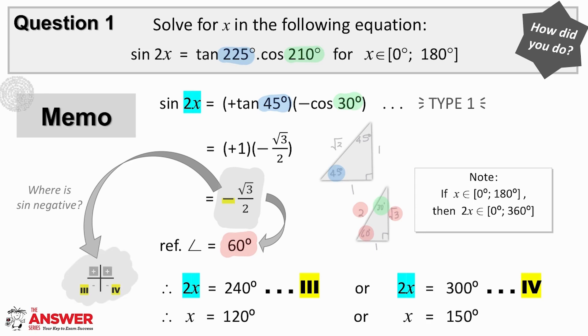So in the third quad, 180 plus 60 is 240 degrees, and in the fourth quad, 360 minus 60 is 300 degrees.